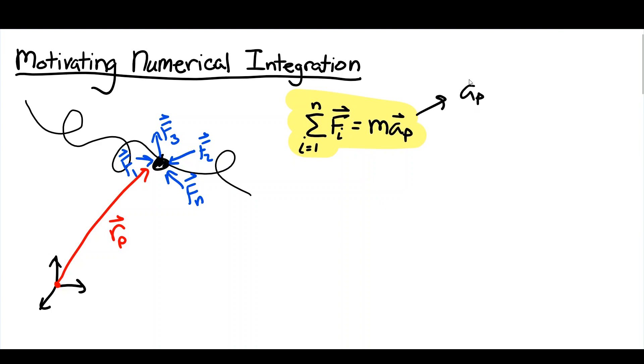Recall that the acceleration of a particle p is equal to the first time derivative of its velocity. Additionally, the acceleration of a particle p is equal to the second time derivative of its position.